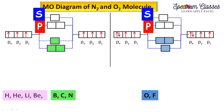What I told you earlier, up to nitrogen we are following pi then sigma for bonding molecular orbitals. And for oxygen and chlorine, we are following sigma then pi for bonding molecular orbitals.